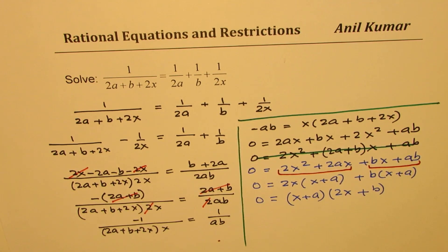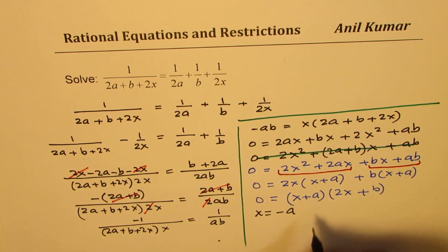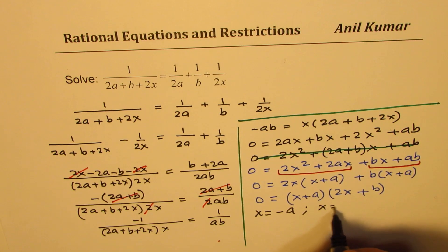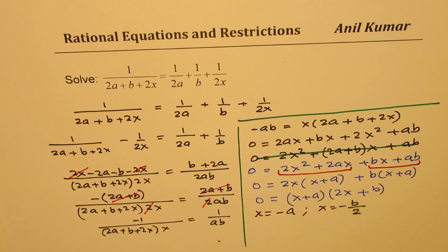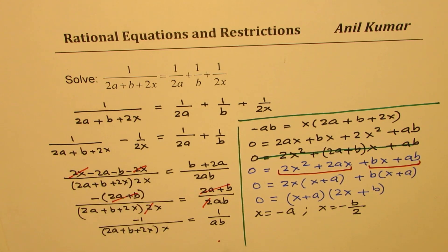So that gives you a solution for x. So x is equal to minus a in the first case and x equals to minus b by 2 in the second case. Do you get an idea? So that is how you could actually solve this equation.